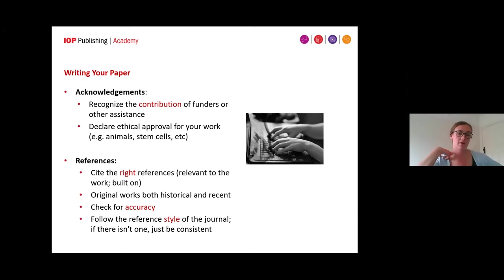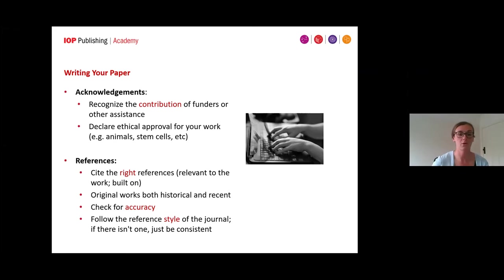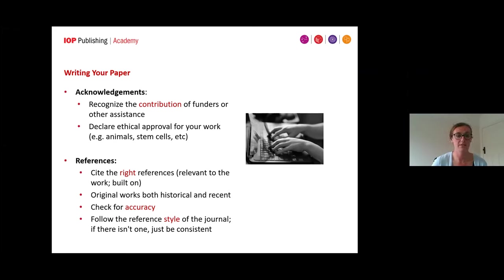In acknowledgements, be sure to recognise all contributions from funders and co-authors if they're not included as a co-author. Make sure you have the funding code available for this section. It's also an opportunity to declare any ethical approval for your work, for example if you've worked with animals or stem cells. In the references, make sure you're citing all relevant works. Check for accuracy, follow the reference style of your journal of choice — at IOP we're fairly flexible with reference style, so any style is acceptable as long as it's consistent.